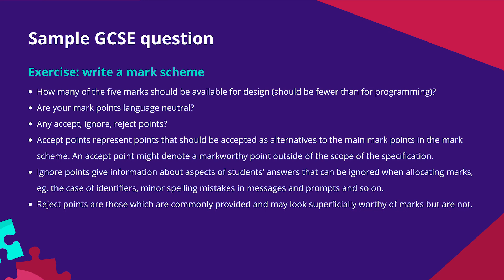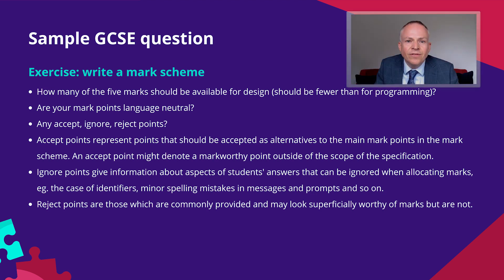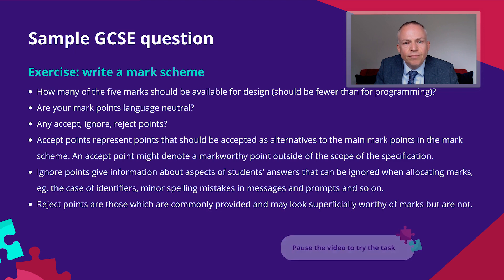Accept points represent points that should be accepted as alternatives to the main points in the mark scheme — for example, a mark worthy point outside of the scope of the specification. Ignore points give information about aspects of students' answers that can be ignored when allocating marks, such as the case of identifiers or minor spelling mistakes in messages. Reject points identify commonly given answers that may look superficially mark worthy but are not. Pause the video and have a go at writing a mark scheme, then we will look at our mark scheme for this question.